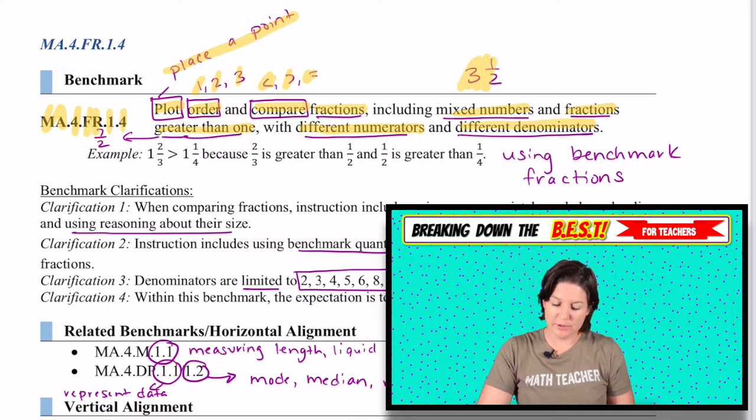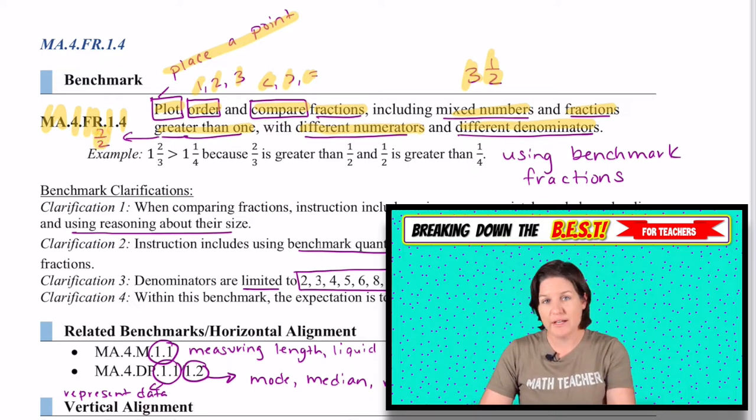It includes mixed numbers. Mixed numbers have a whole number and a fraction. And fractions greater than one can be like this where our numerator, seven, is greater than our denominator, two.